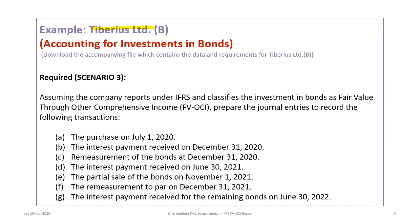This video is based on the Tiberius Limited B example, so please make sure that you're familiar with the data and requirements for that problem. This video covers scenario 3. The requirement for scenario 3 is to assume that the company reports under IFRS and classifies the investment as fair value through other comprehensive income, or FVOCI. We have to prepare the journal entries to record these transactions.